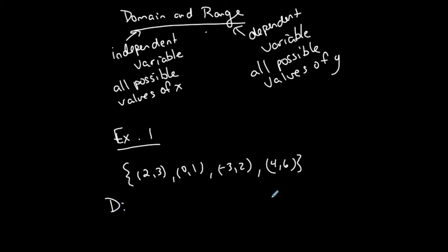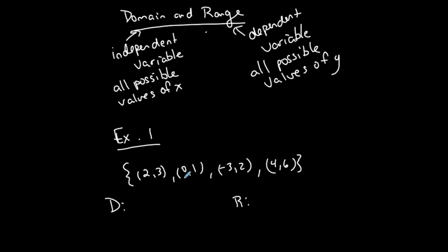D is going to be my domain, R is going to be my range. Because I can list them, I'm going to represent my domain and range in set notation, going from least to greatest. Now, is this a function? For every x there corresponds exactly one y — there is no repeated x with different y-coordinates. So this is a function.